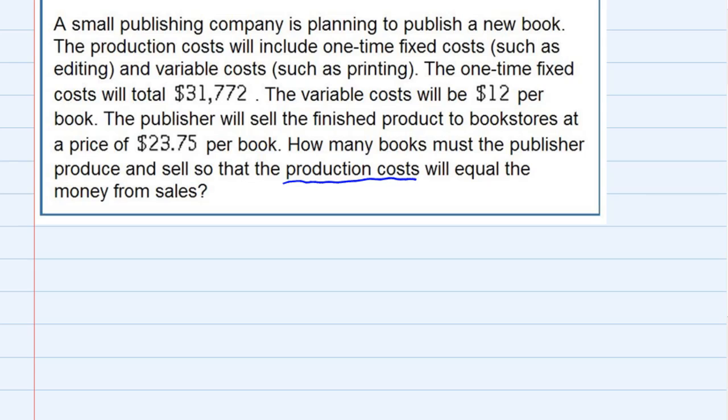The production cost will equal the money from sales. Let's look back through and look first at the production cost. Our production cost, it says there is a one-time fixed cost of $31,772 plus there is a variable cost of $12 per book.